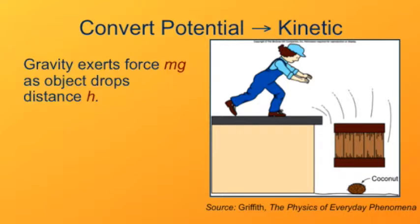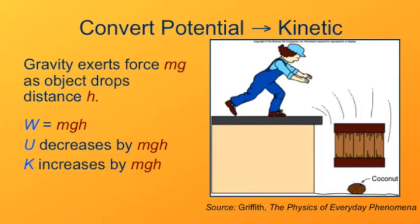So gravity is exerting a force mg on the object as it drops a distance h. So the work done by gravity is mgh. The gravitational potential energy decreases by an amount mgh. The kinetic energy increases by an amount mgh. The mechanical energy is conserved. Potential energy goes down by an amount mgh. Kinetic energy increases by the same amount.